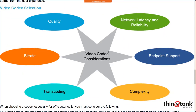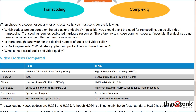For video codec selection, considerations are the same as for voice: quality, bit rate (equivalent to bandwidth), transcoding resources, and codec complexity. H.264 or MPEG-4 is advanced video coding released in 2003 — one of the most widely used codecs. Netflix, Google, and YouTube all use H.264. Its predecessor H.263 (MPEG-2) used the same encoding techniques but at less bit rate.